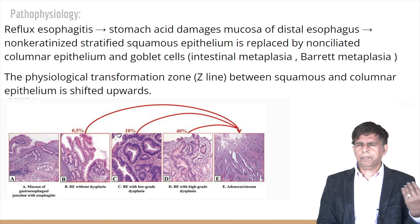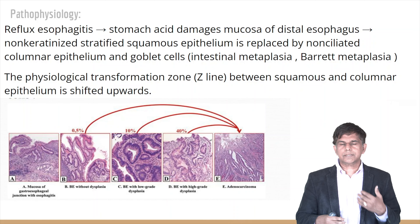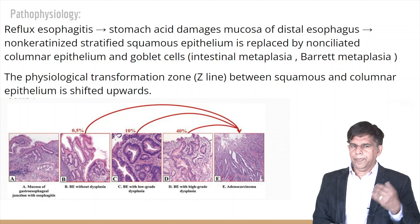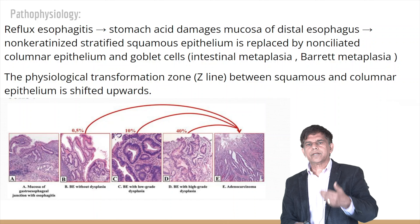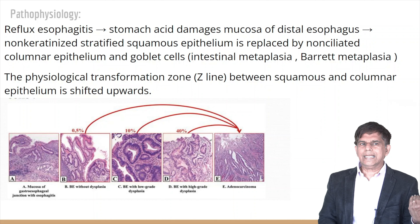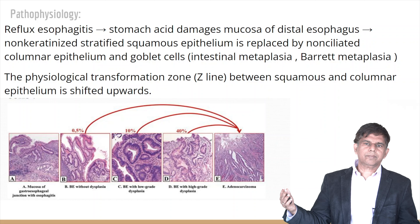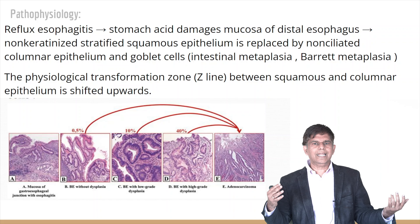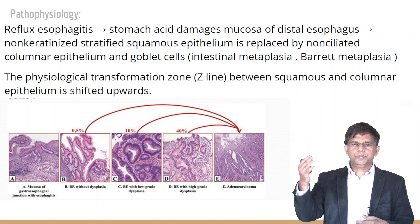The main concern is that Barrett's esophagus can become cancer. Looking at the pathophysiology: stomach acid damages the mucosa of the distal esophagus. The normal squamous epithelium is lost, and columnar epithelium with goblet cells comes in — this is called intestinal metaplasia, also known as Barrett's metaplasia.